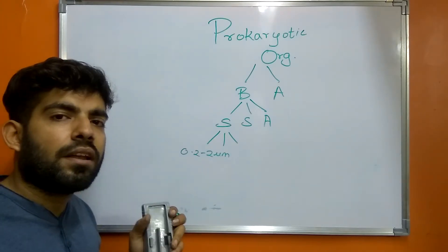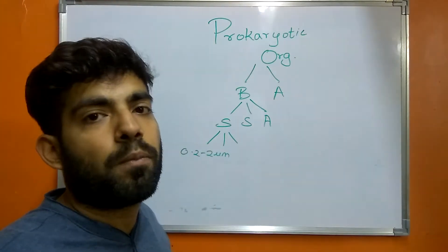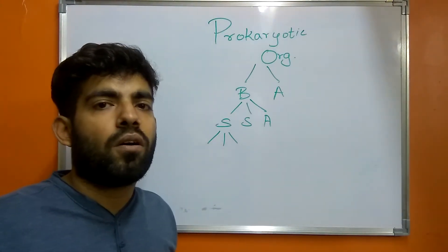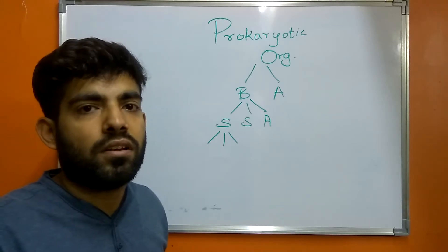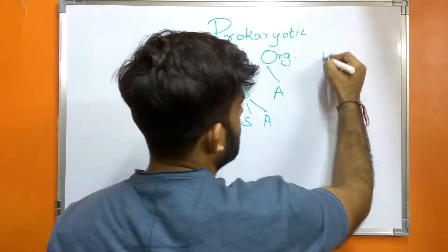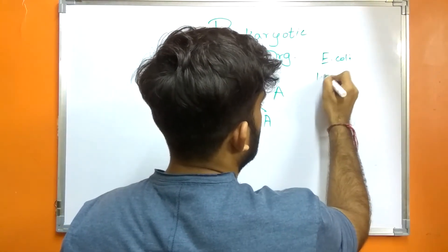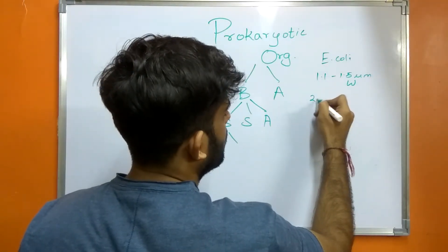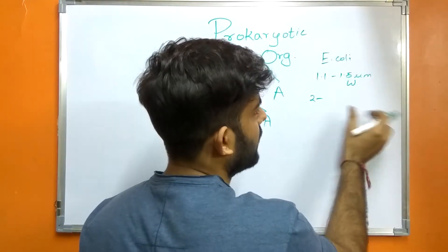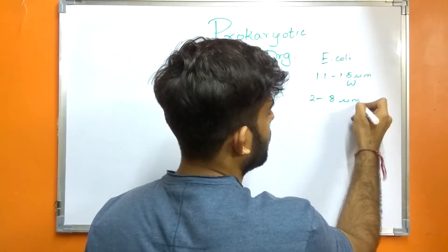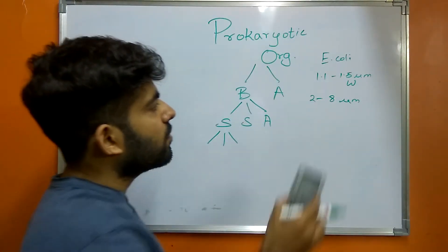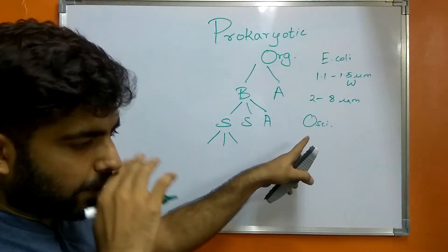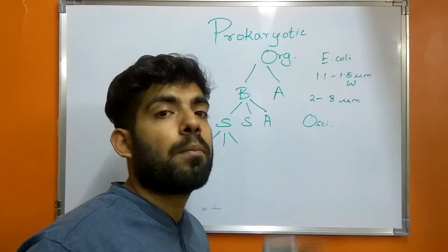These ultra-microbacteria or nanobacteria are much smaller than the genus Mycoplasma, but certain scientists also suggest that the concept of nanobacteria is just an artifact. The size of E. coli is 1.1 to 1.5 micrometers in width and 2 to 8 micrometers in length. Another organism, Oscillatoria, has a range of 7 micrometers in diameter.